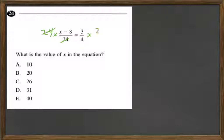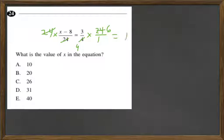Do the same on the other side. And we can divide by 4 here. Divide 24 by 4 is 6, and that equals 18 on this side. So now what are we left with? We have x minus 8 equals 18.